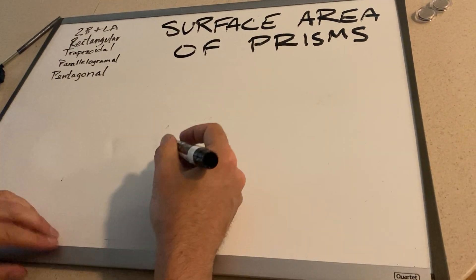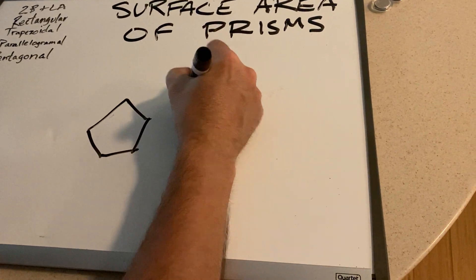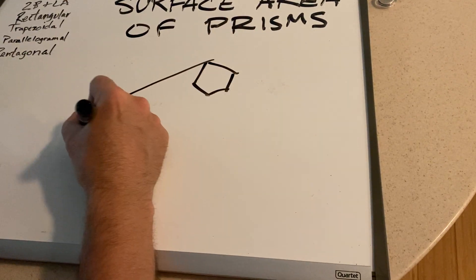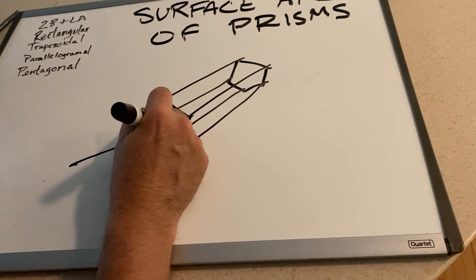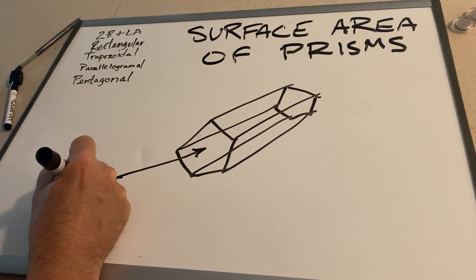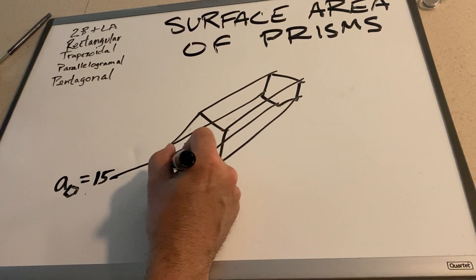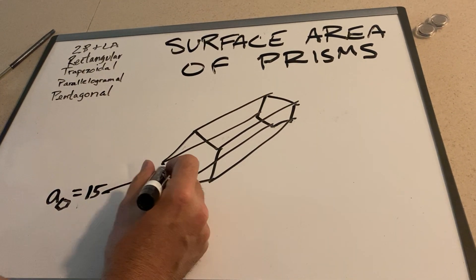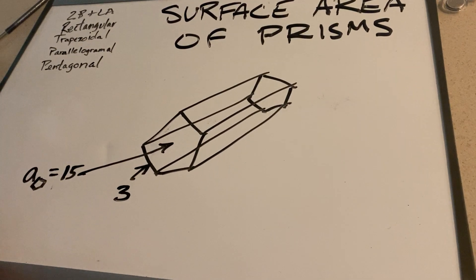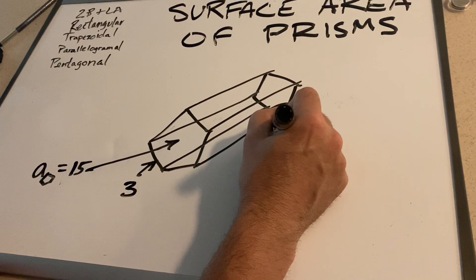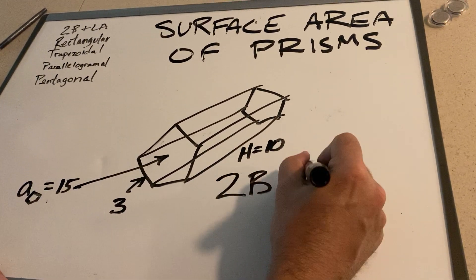Let's say this time they gave us a pentagon, and they told us that this is a regular pentagon. Since it's a prism, we have two bases. They tell us that the area of the pentagon is 15, and that one side of that pentagon is 3. And they told us that the height of the prism is 10. Once again, our formula is 2B plus LA.